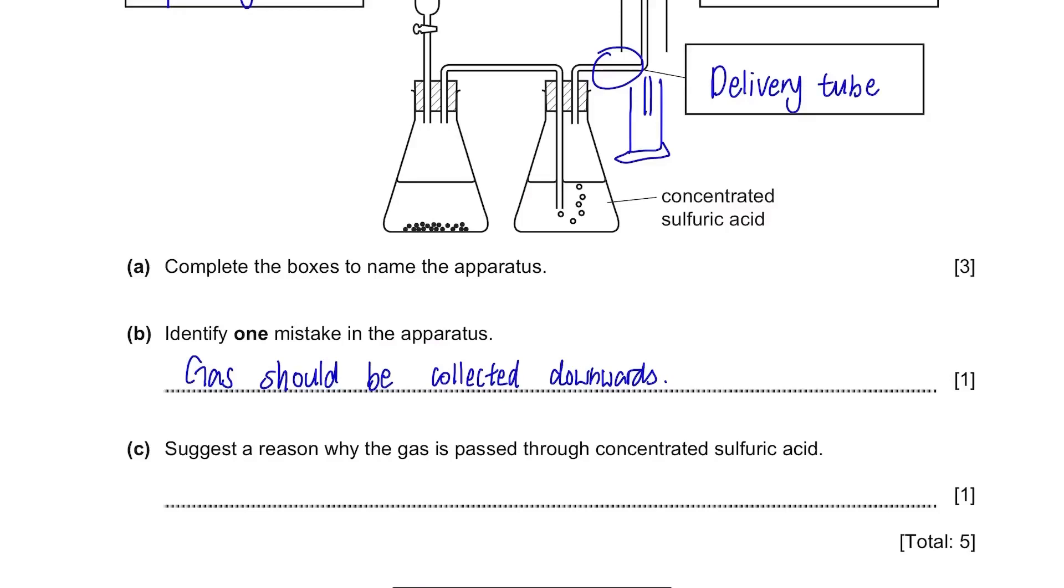Part C. Suggest the reason why the gas is passed through concentrated sulfuric acid. One of the uses of concentrated sulfuric acid is as a dehydrating agent. The gas is passed through this so that water or other impurities can be removed and only the wanted gas is collected.